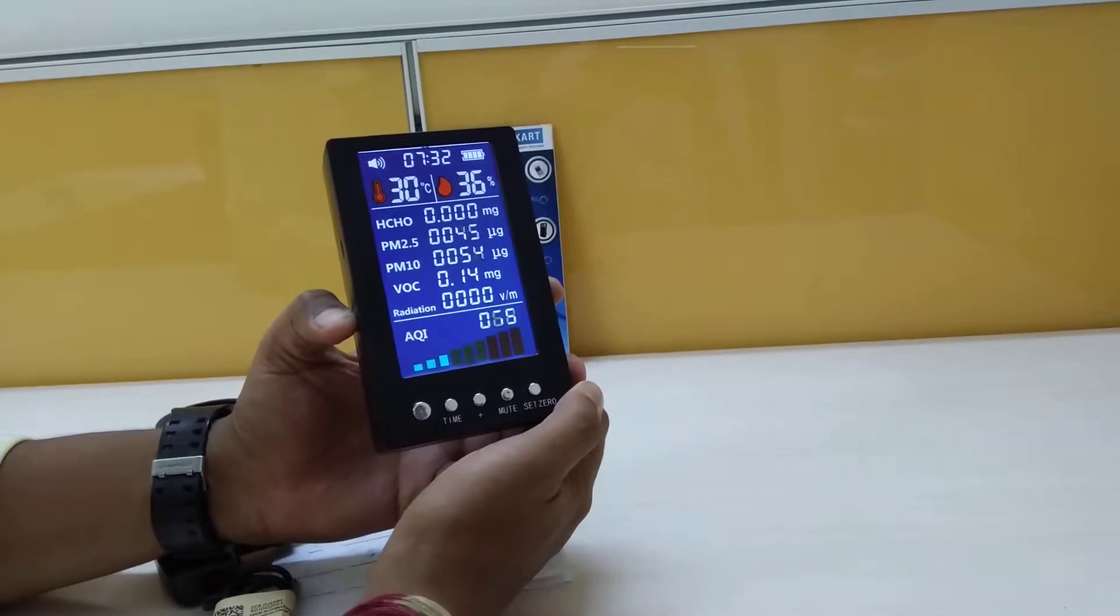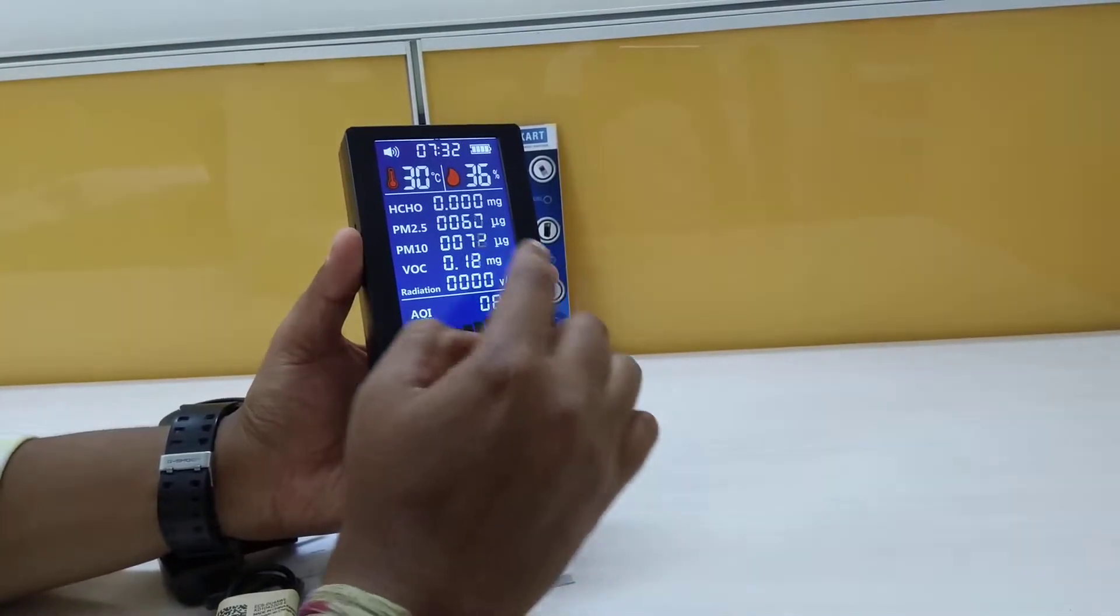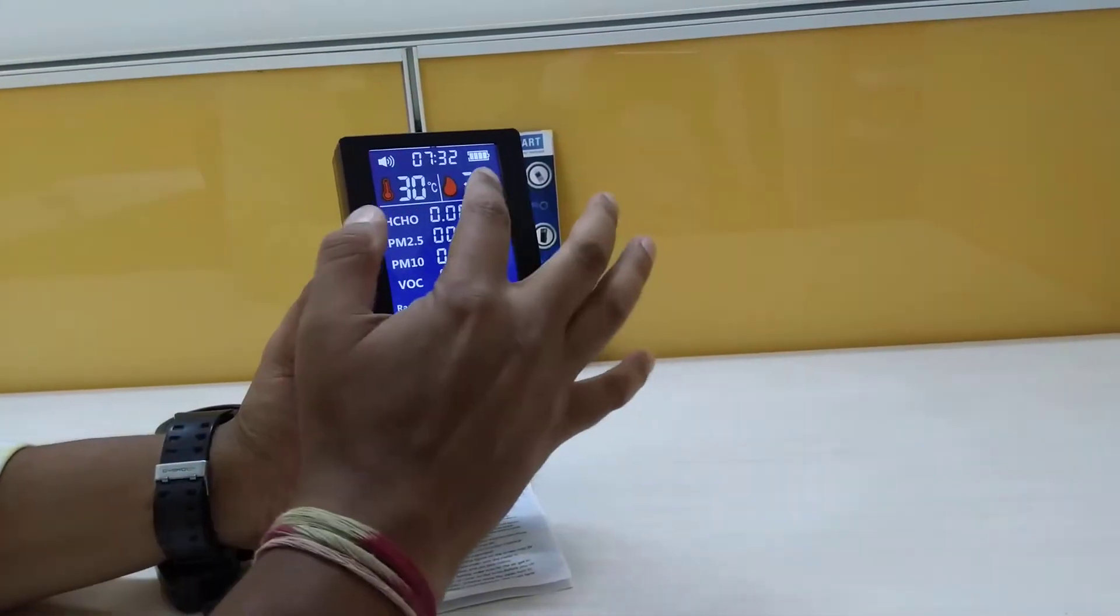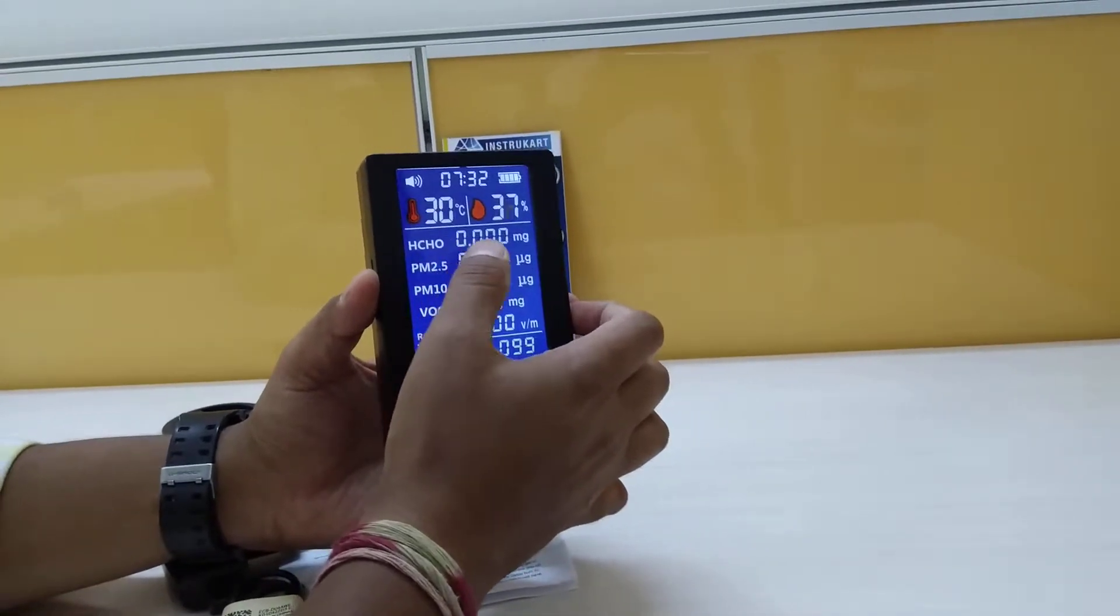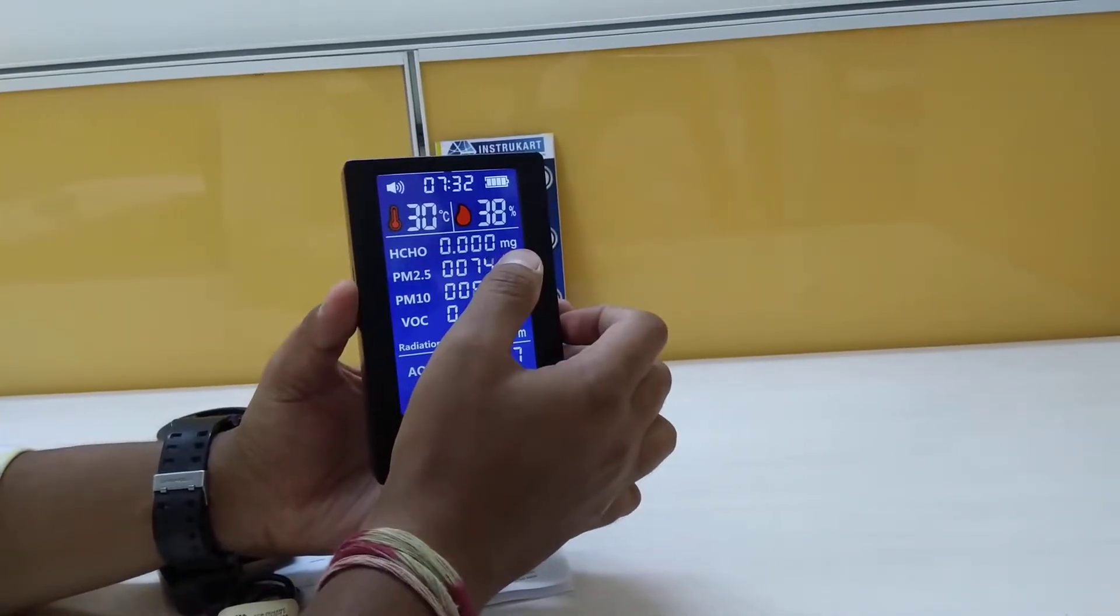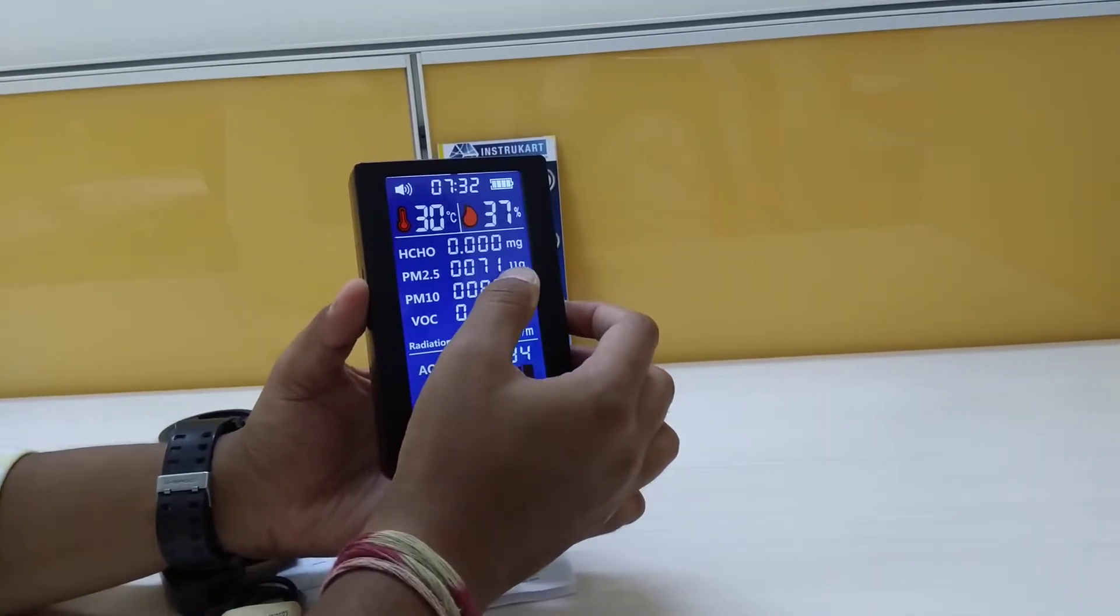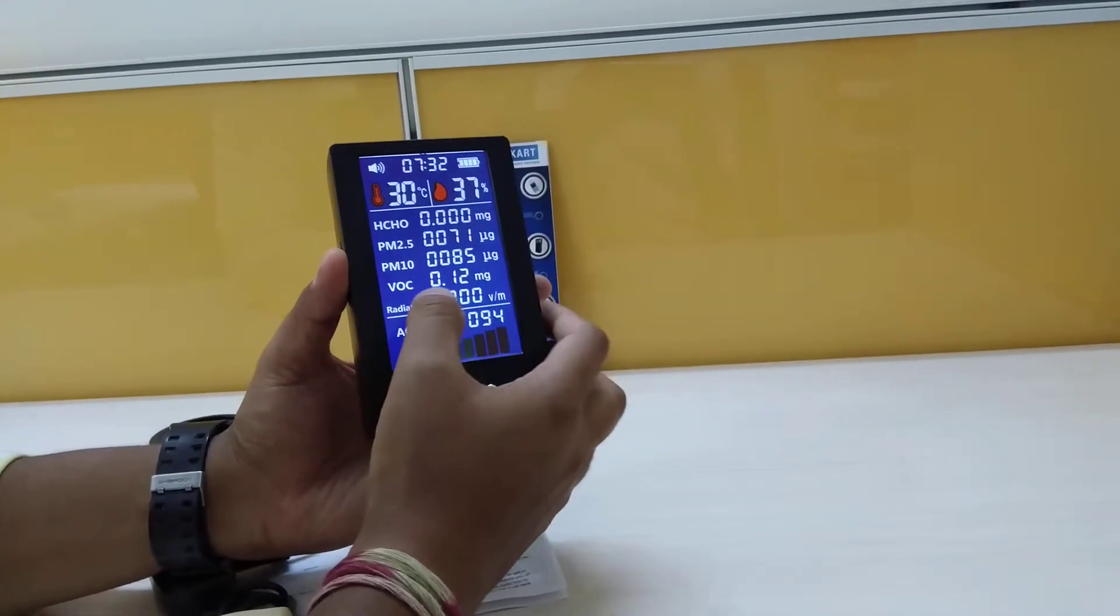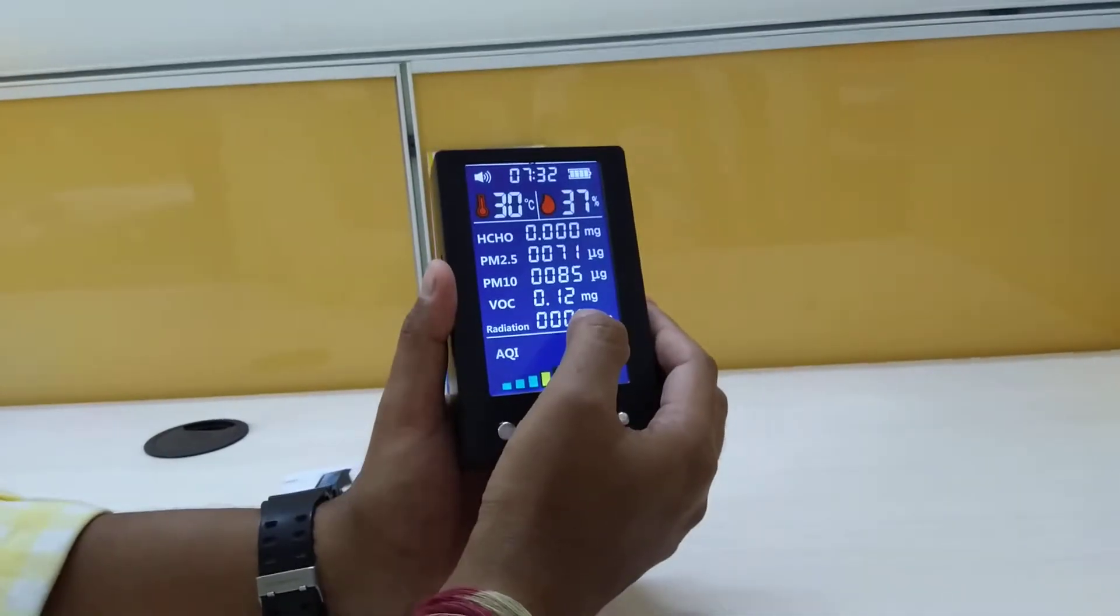You can use this instrument. It has around seven parameters: temperature, humidity, formaldehyde which is HCHO in milligrams, PM 2.5 in microgram, PM 10 in microgram, VOC which is volatile organic compound in microgram.